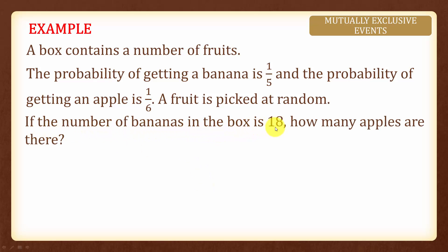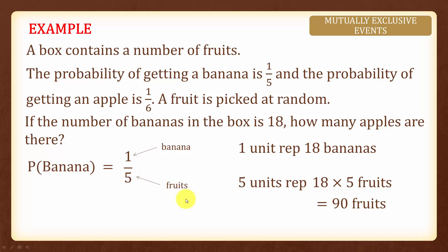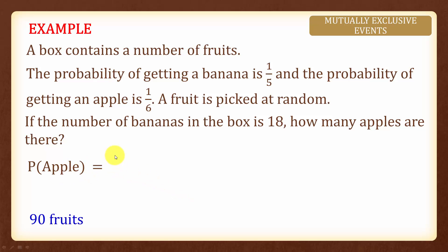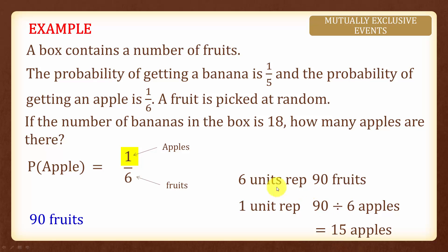What happens if the number of bananas in the box is 18? How many apples are there? The probability of getting a banana is 1 over 5, where the numerator represents bananas and the denominator represents total fruits. If 1 unit represents 18 bananas, then 5 units represent 18 times 5, which is 90 fruits. The probability of getting an apple is 1 over 6. If 6 units represents 90 fruits, then 1 unit represents 90 divided by 6, giving us 15 apples.